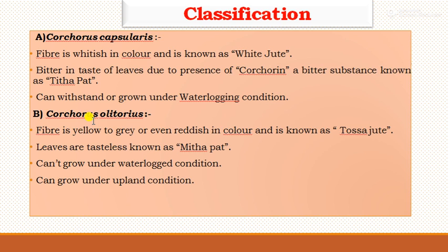In terms of classification, there are two types of jute species. The first is Corchorus capsularis, called white jute — its fibers are whitish in color, the leaves are bitter in taste due to the presence of a bitter substance known as 'Tita pat,' and this species can withstand water-logging conditions. The second is Corchorus olitorius, the Tossa jute — its fibers are yellow to gray or even reddish in color, the leaves are tasteless (known as 'Mitha pat'), and Tossa jute cannot grow under water-logging conditions; it is cultivated under upland conditions.